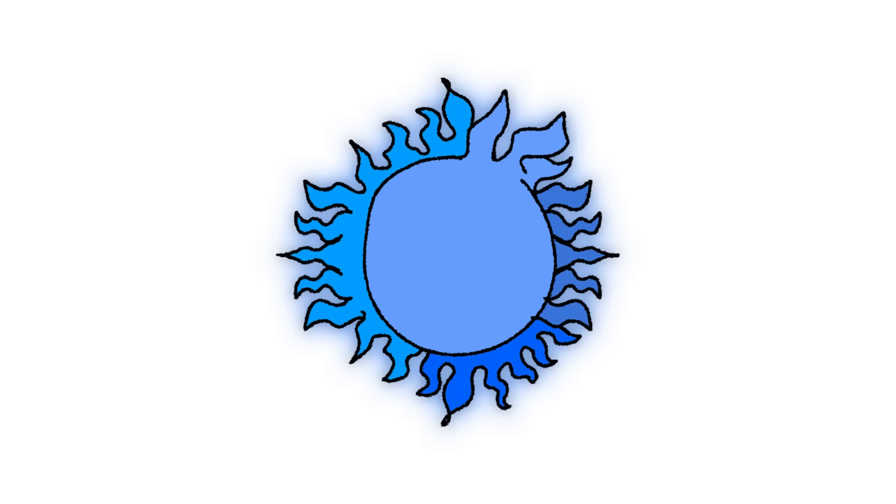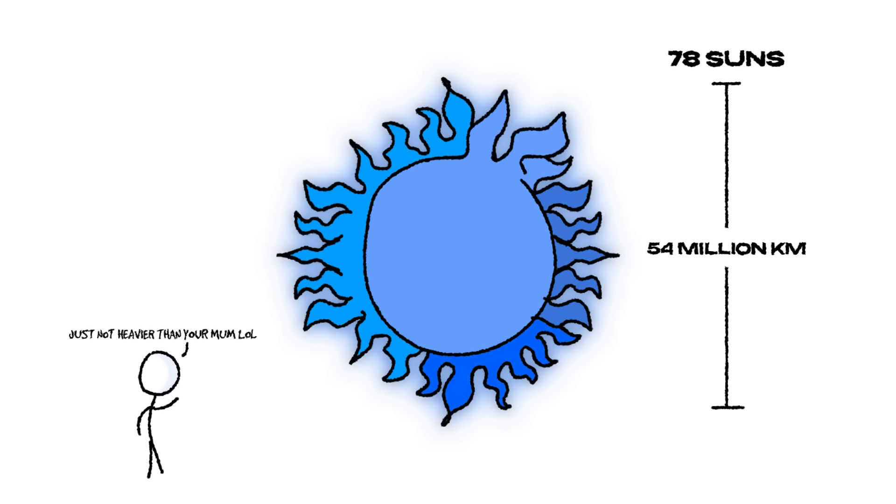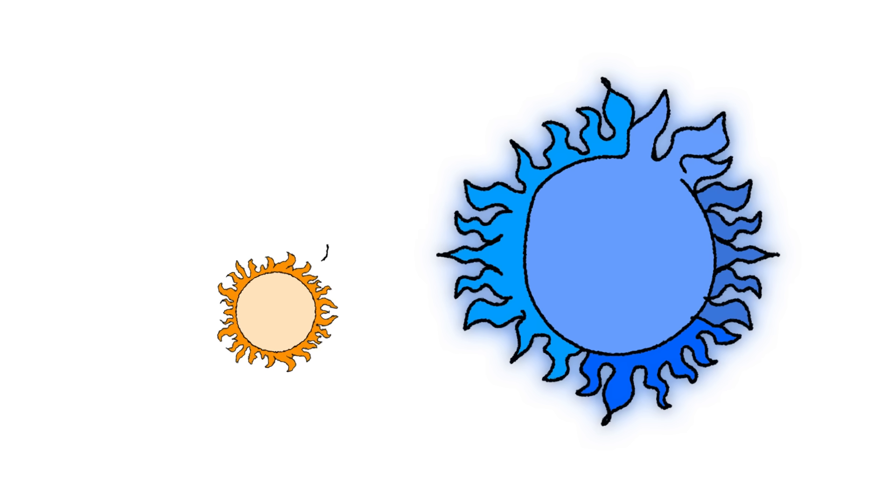Let's crank it up a notch. Rigel, a blue supergiant that makes our sun look like a birthday candle. This monster of a star has a radius of 54 million kilometers, a staggering 78 times the size of our sun. But it's not just big, it's dense and heavy, packing 21 times the sun's mass into its glowing blue core. And if you thought our sun was hot, think again. Rigel's surface temperature reaches a blistering 11,000 degrees Celsius, nearly twice as hot as the sun.